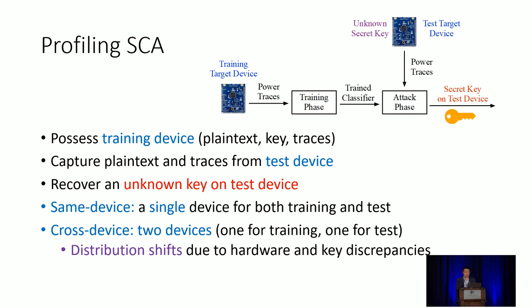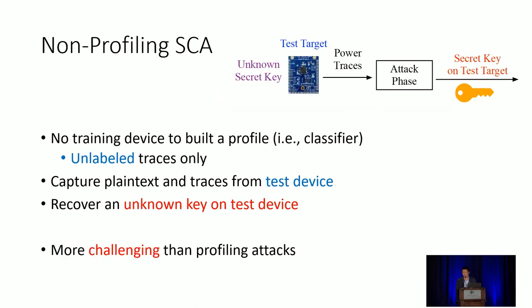In the cross-device scenario, we face distribution shifts between training and test data due to hardware and key discrepancies between the two devices. In a non-profiling attack, the attacker does not have a training device; they only have the test device, can capture traces and plaintext, and try to recover the key. There is no profiling in this case — all traces are unlabeled — and this is more challenging compared to profiling attacks.